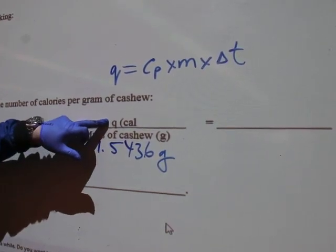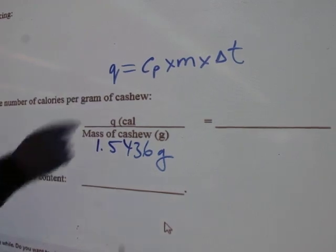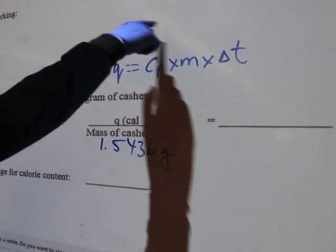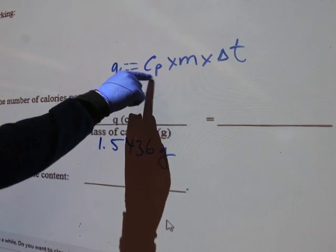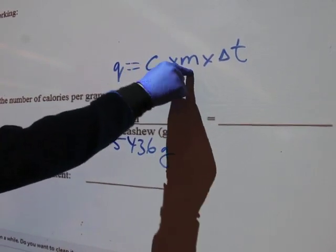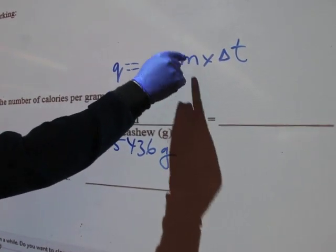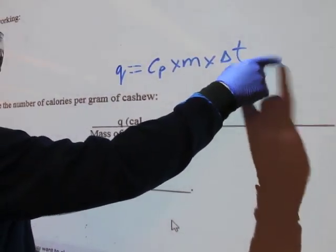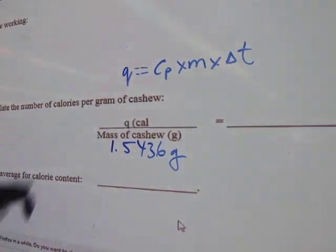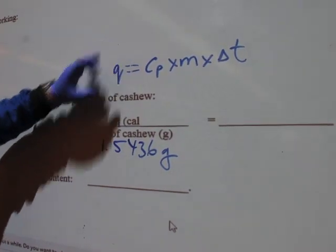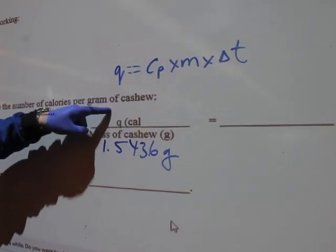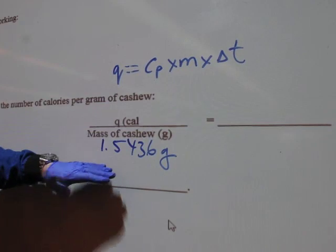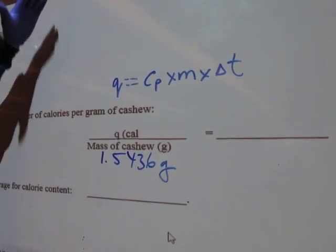The way you will do it: remember in the previous step you found the Q by using 1 calorie per gram per Celsius as the specific capacity of water, times 20.0 grams of water, times T final minus T initial. You plug whatever you get here in the numerator.